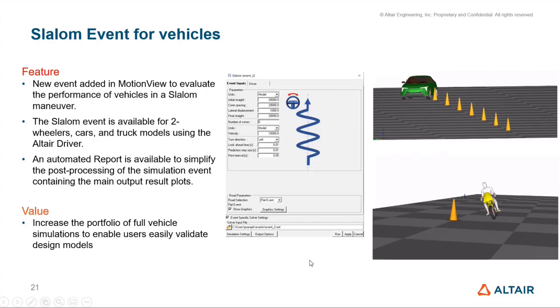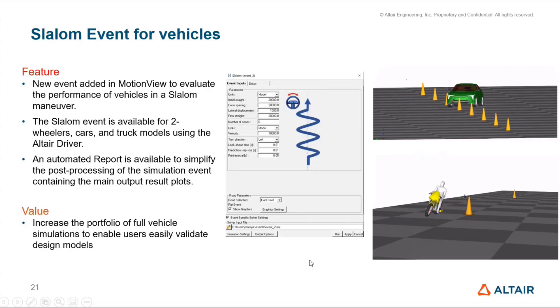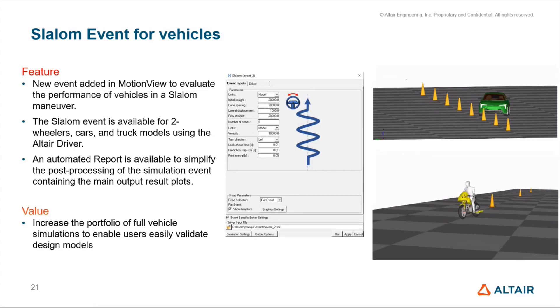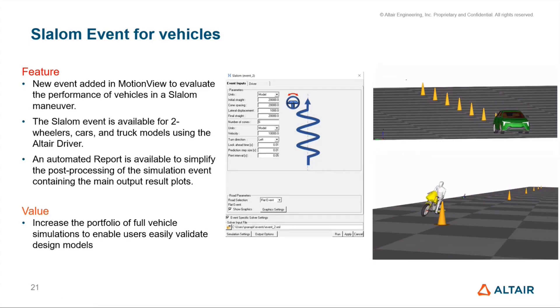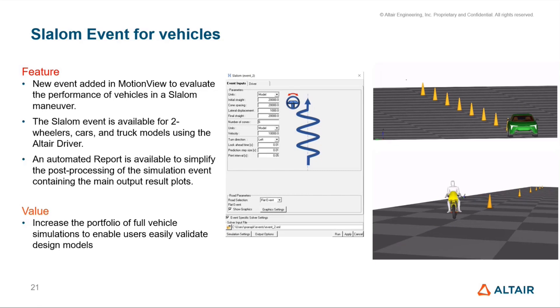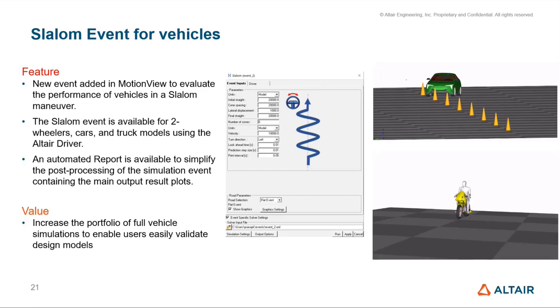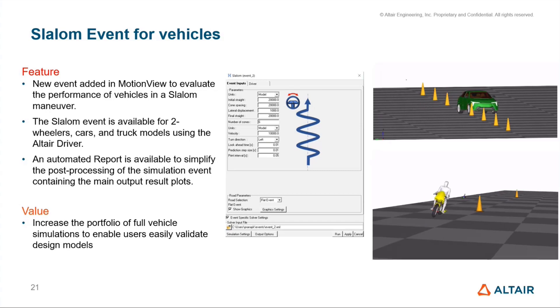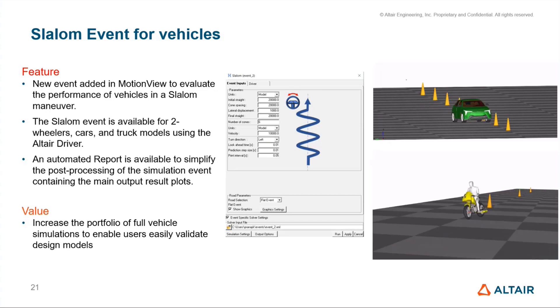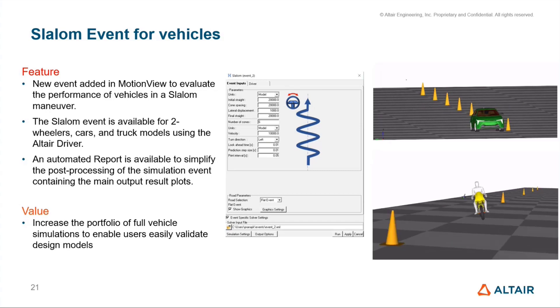Now, what's new in our ground vehicle solutions for 2022.1. A new slalom event is available under the vehicle events, adding to an already long list of full vehicle events. The event is available for four wheelers, two wheelers, and the truck library, and it comes with an automated report.